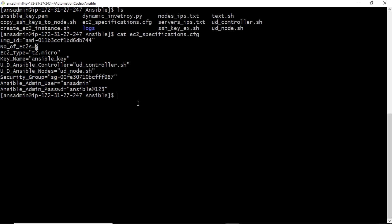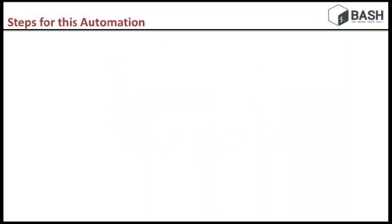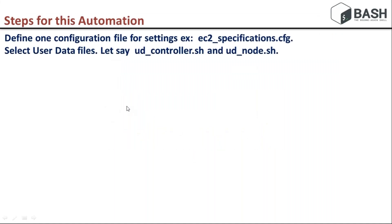This script will provision your instances and at the same time install and configure Ansible. For the second step, you need to provide user data files. While launching EC2 instances we can provide user data. For the controller I need Ansible installation steps, and for nodes I just need to update. All that data is provided in two separate files.